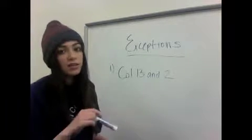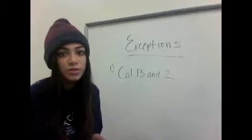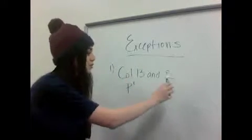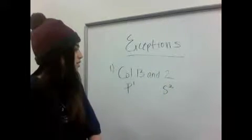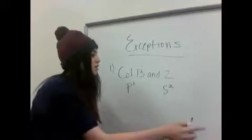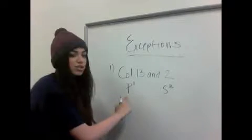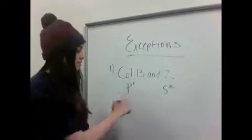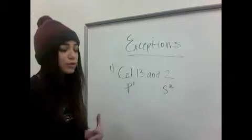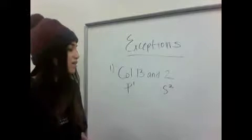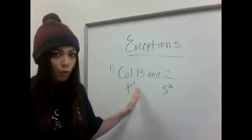There are exceptions to ionization energy trends, and Dr. Rogers will test you on them. The first exception involves column 13 (p subshell, p¹) versus column 2 (s subshell, s²). You might think column 13 would have higher ionization energy since it has more protons, but that's not the case — it actually requires more energy to remove the s² electron.